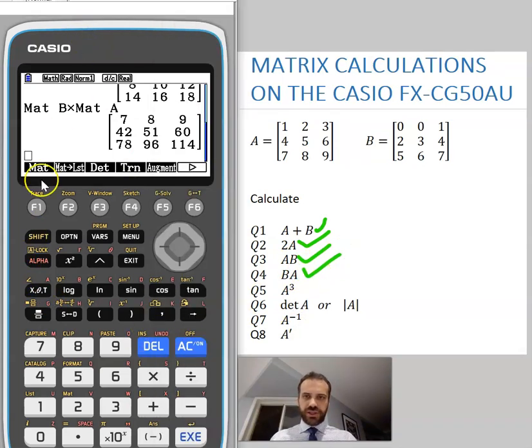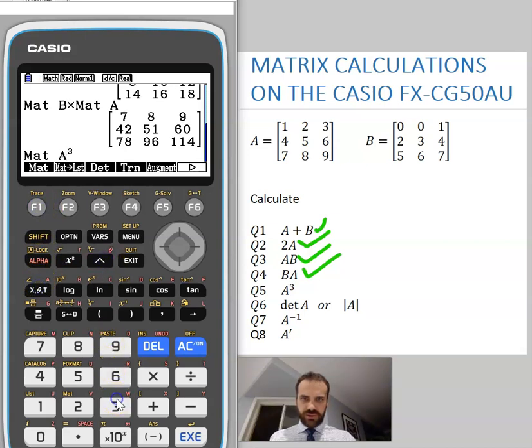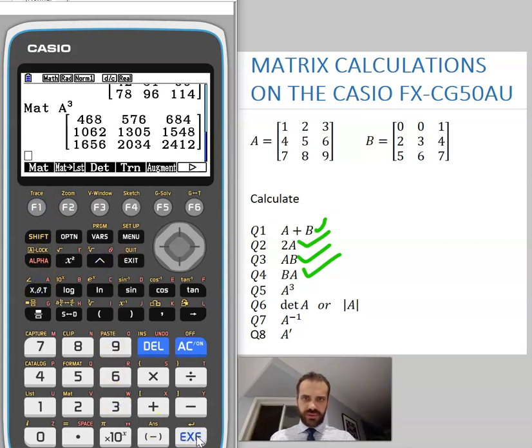Nothing's really changing here. Now I can do matrix alpha A to the power of 3. And you can see we've got our A to the power of 3 here.